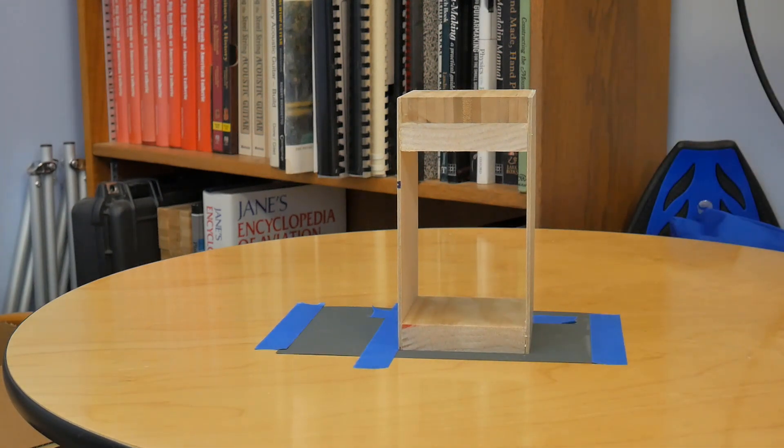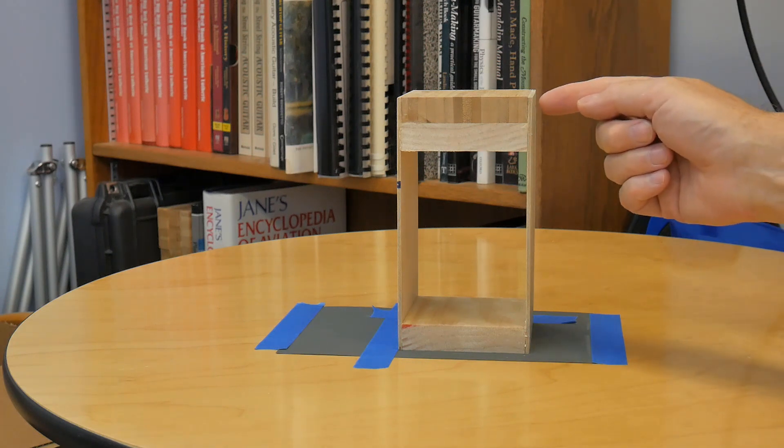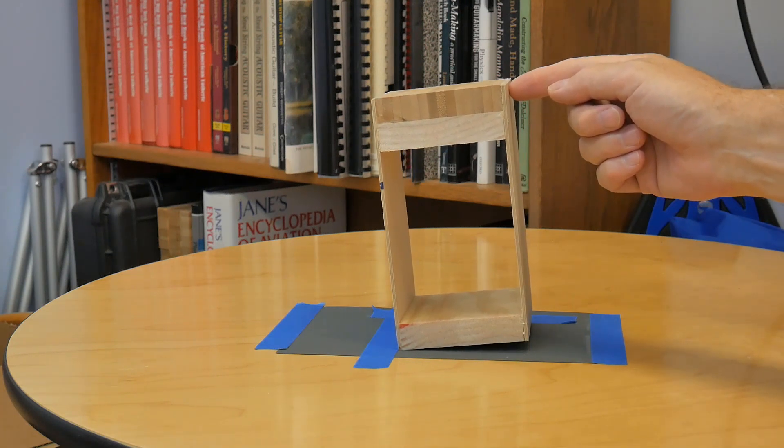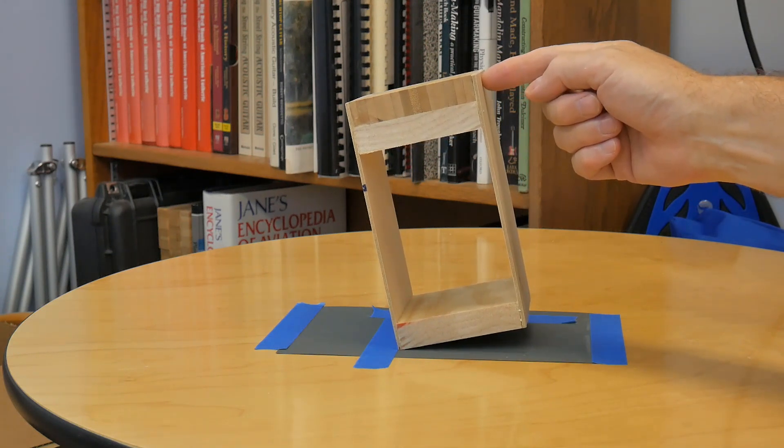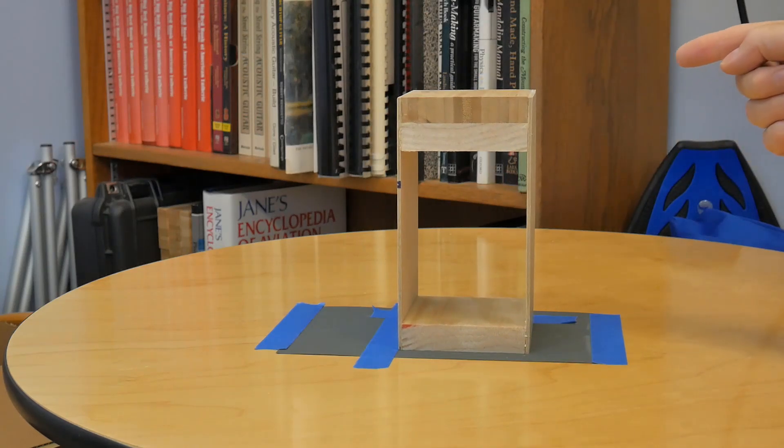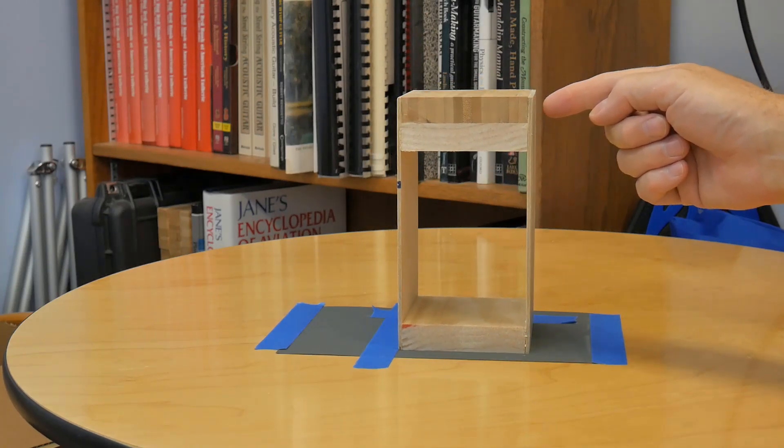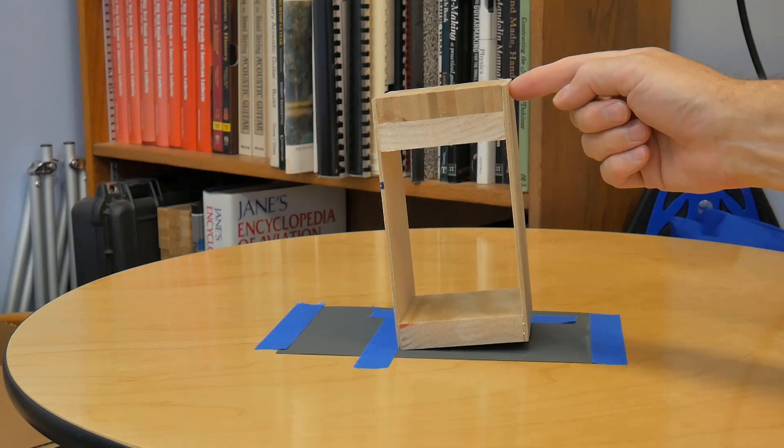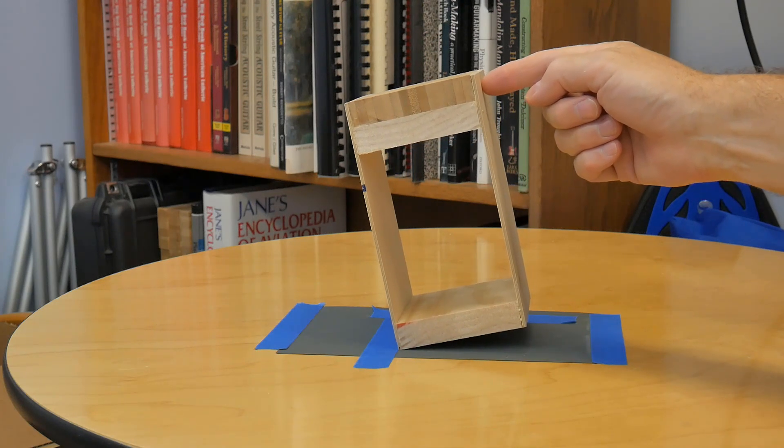So let's tip it over. Rather than measuring a force, let's measure an angle. So I can push, and you can see now the weight of the box is borne by the edge of the box, but if I let go, it goes back to vertical. That means the center of gravity hasn't gone past that one edge.